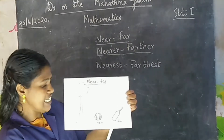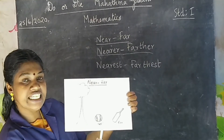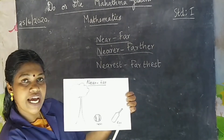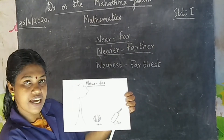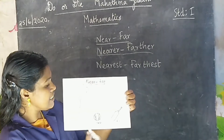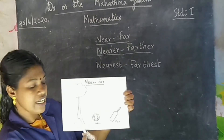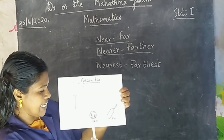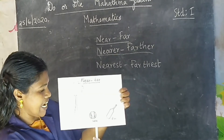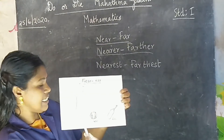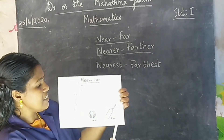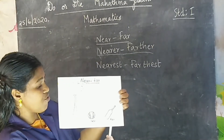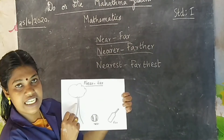Which one is near this tree? Ball and a bat. Ball is near the tree. N-E-A-R. Ball is near the tree. And bat is far. F-A-R from this tree.